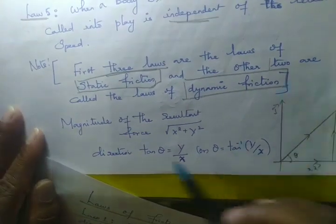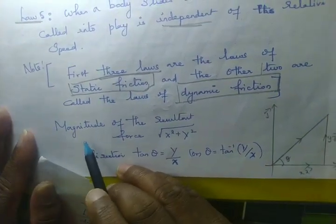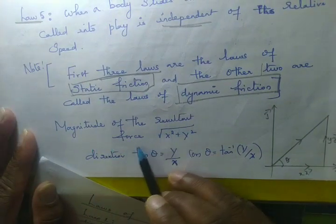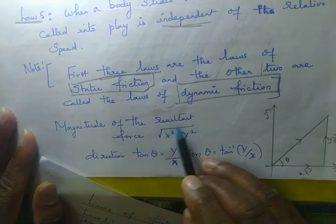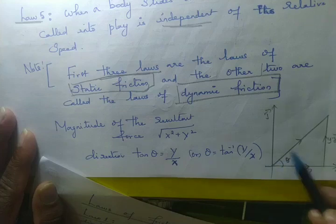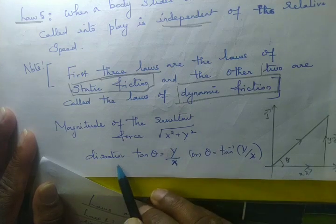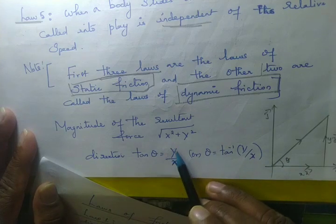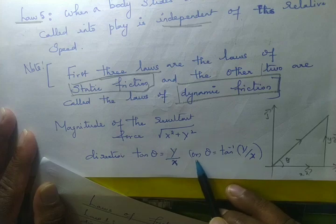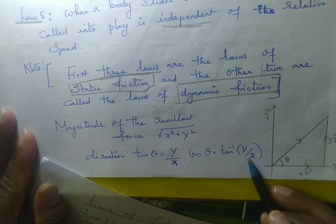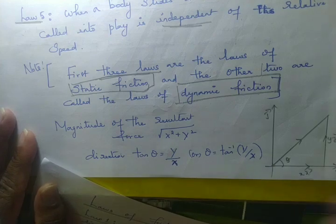In general, the magnitude of a resultant vector is represented by √(x² + y²), and the direction is given by θ = tan⁻¹(y/x). This is important.